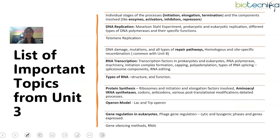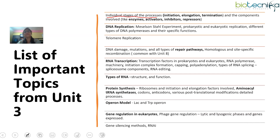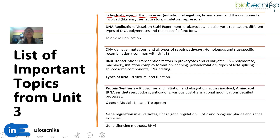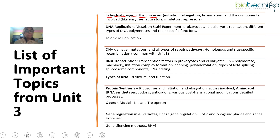Now let's look at the important topics from this unit. The first important thing is the individual stages of all the processes — whether transcription or translation — initiation, elongation, and termination. Direct questions about stages may not always come, but you cannot skip them because understanding the rest of the unit depends on knowing these processes. You also need to know the components involved: which enzymes are involved, how activators work, where they bind, the inhibitors and repressors — all components, their individual roles, and binding sites should be completely clear.